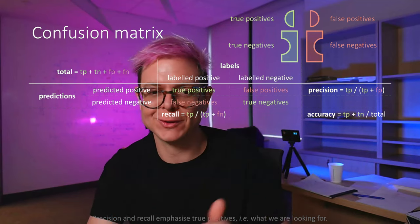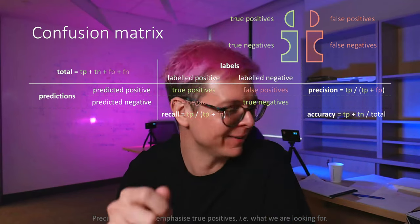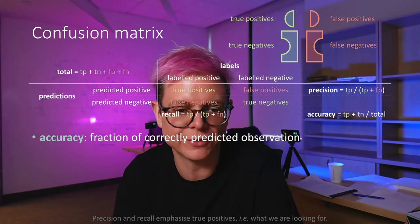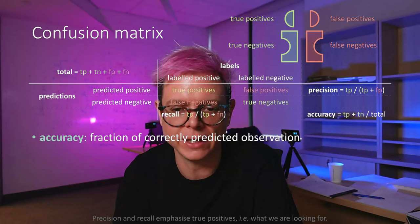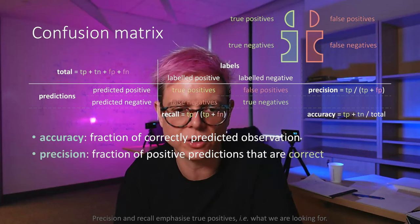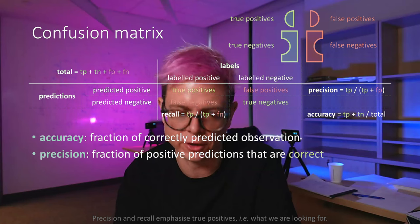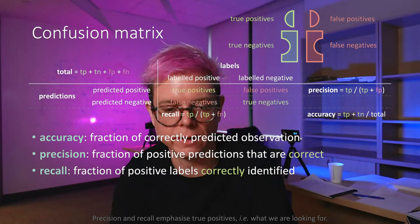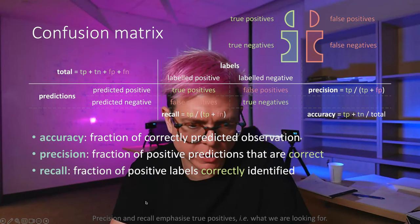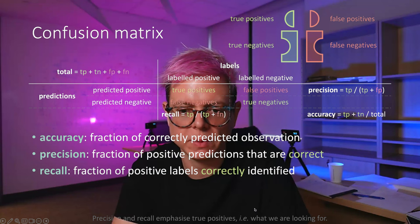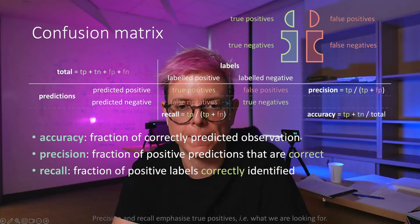So the definitions: accuracy is the fraction of correctly predicted observations; precision is the fraction of positive predictions that are correct; and recall is the fraction of positive labels that are correctly identified. Precision and recall both put emphasis on the positive class — what we are looking for, like spam.